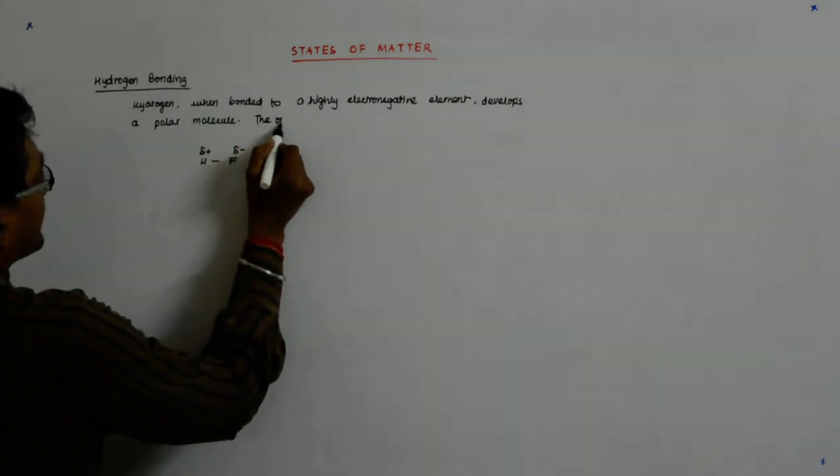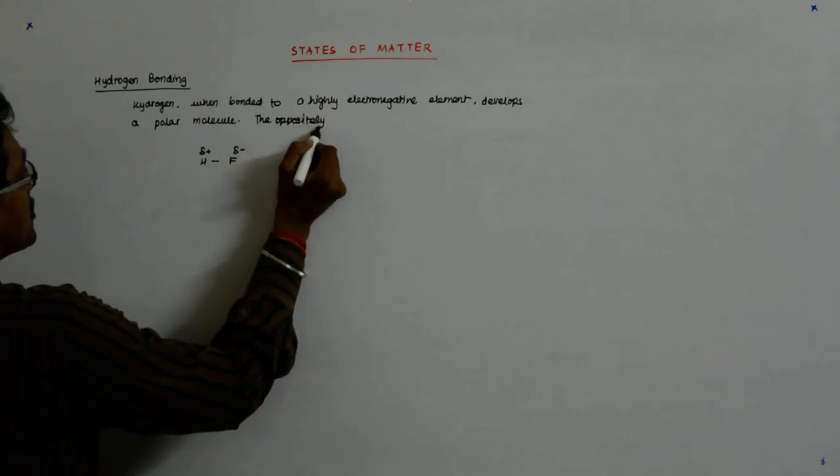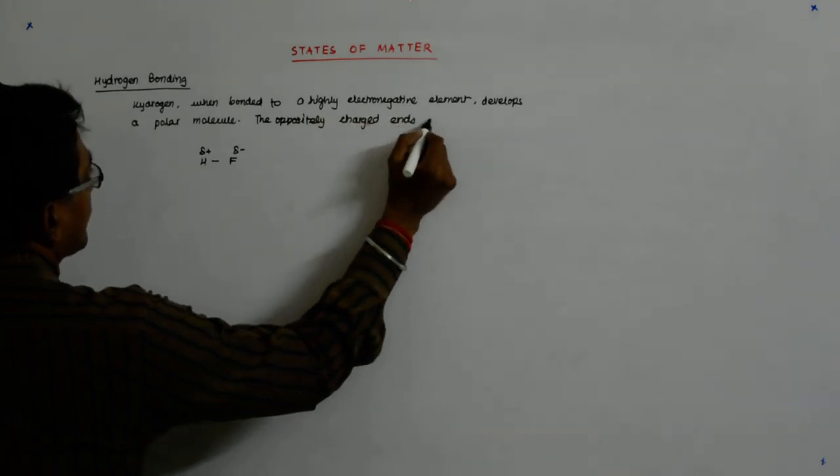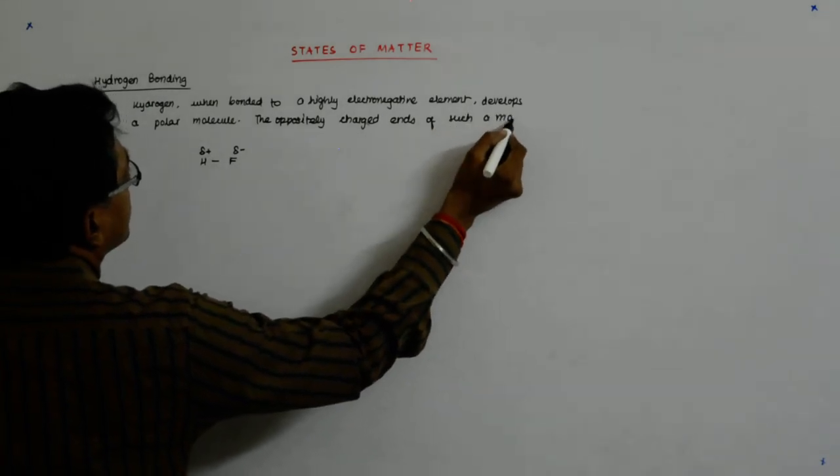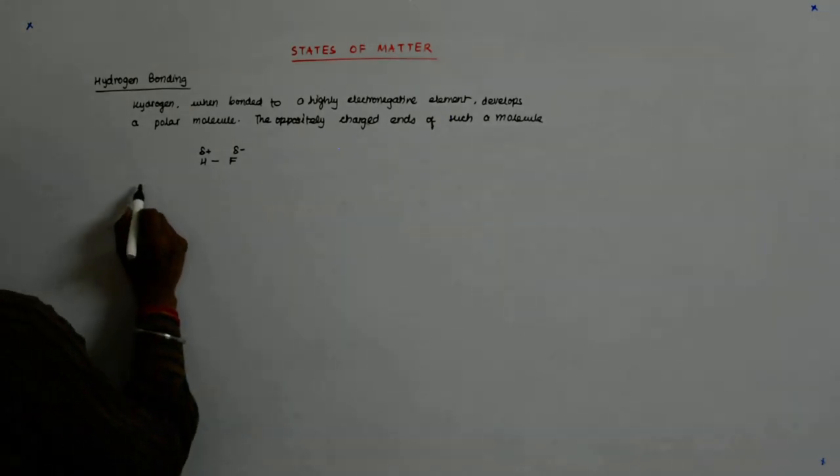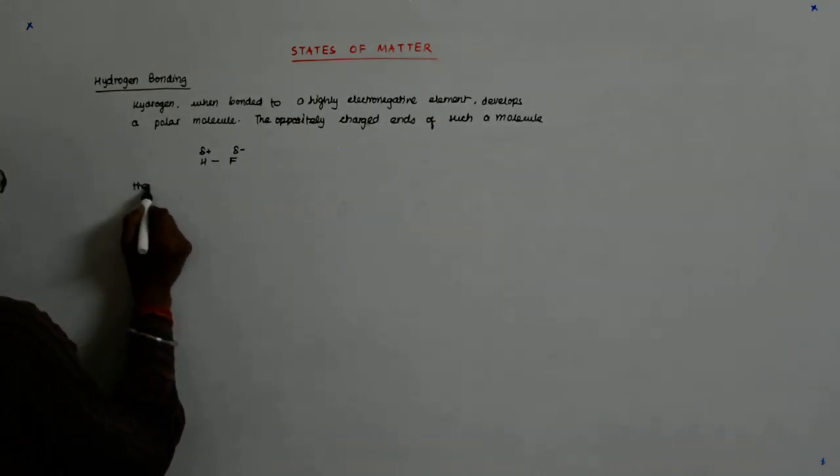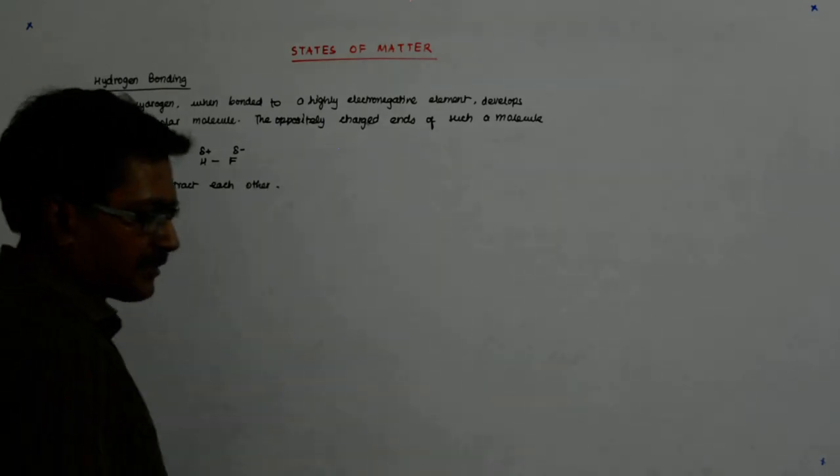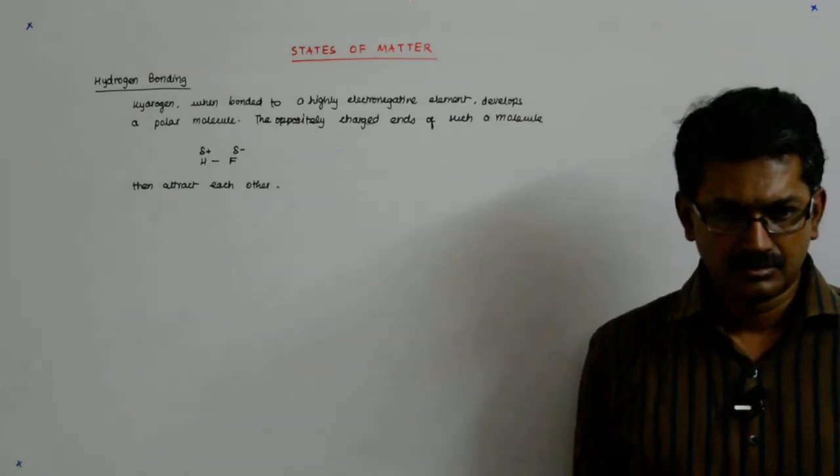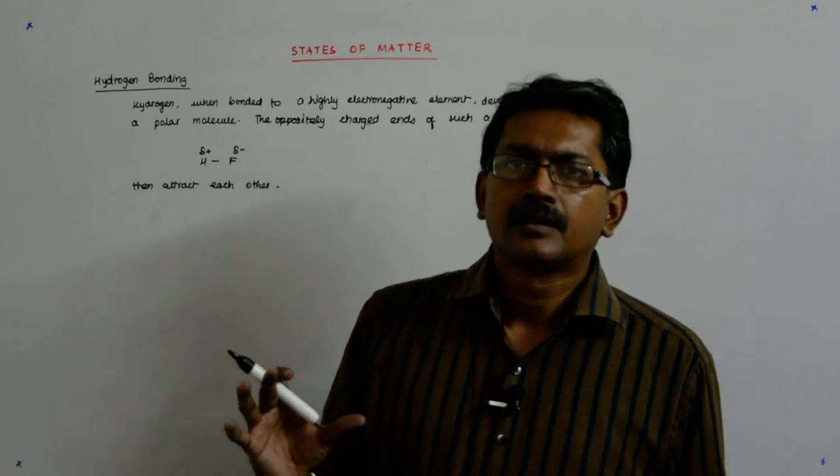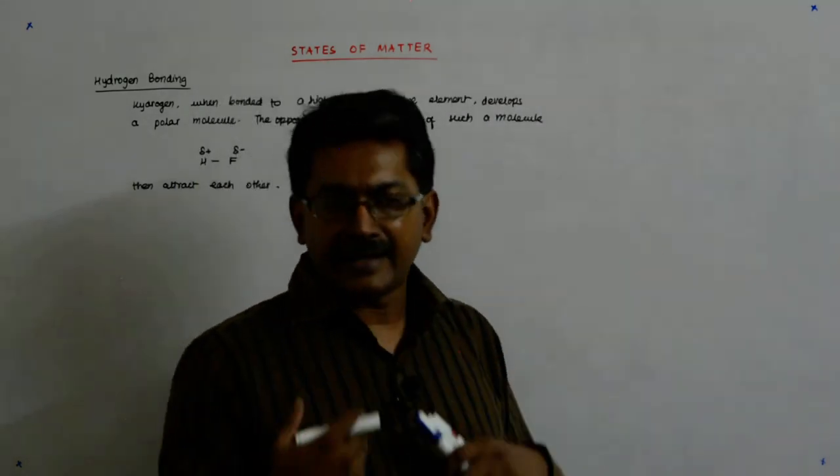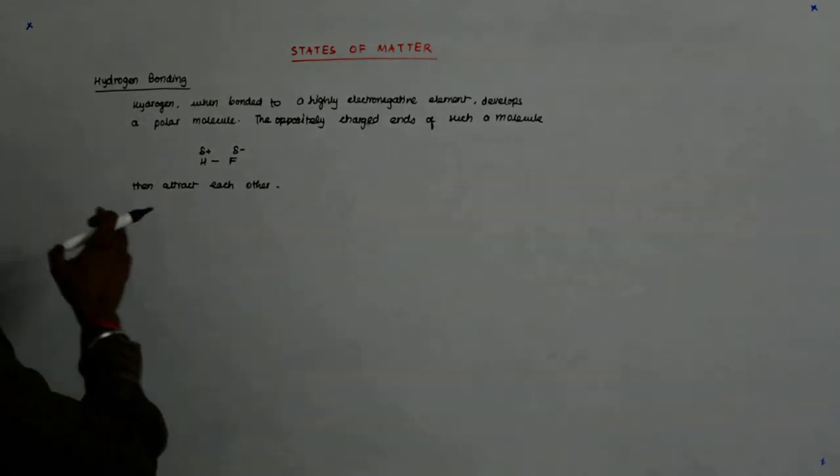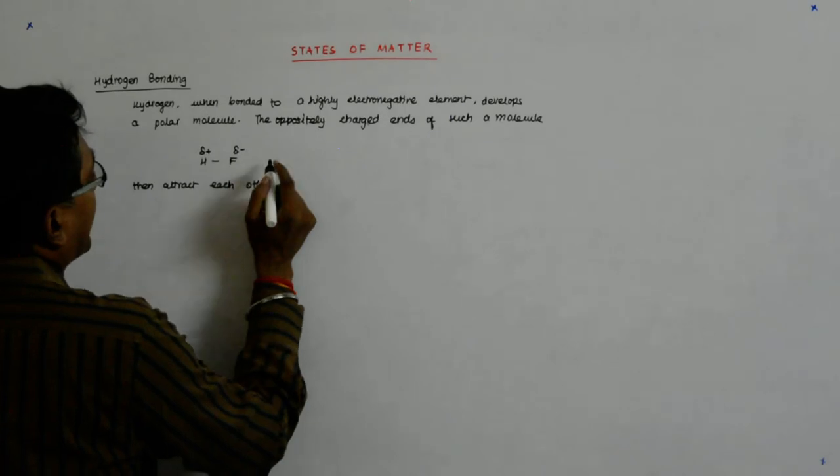The oppositely charged ends of such a molecule then attract each other. You see how they are intermolecular forces? Because there is a whole molecule and the molecule as an independent entity is attracting some other molecule which is independent. And that was the reason we had avoided the intramolecular bonding forces.